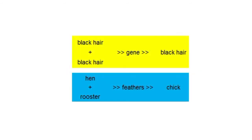We call these words generic terms because of biology. In nature, if the parents — the dad and the mom — both have black hair, they will give the gene, the black hair gene, to their child, and the baby will most probably have black hair. A hen and a rooster will give the chick the gene of feathers, because the hen and the rooster have feathers and they have given this gene in their DNA to their chicks.